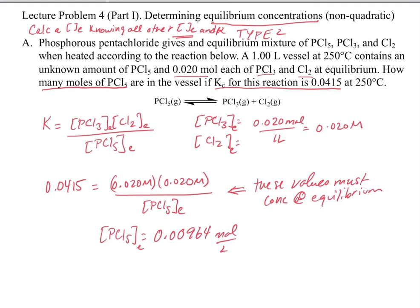In this case the volume is 1 liter, but it could be anything — you'd just divide by whatever the volume is. At the very end, the question asks for number of moles. Our total volume is 1 liter, so multiplying gives us 0.00964 moles of PCl5 at equilibrium. That is the solution to the problem.